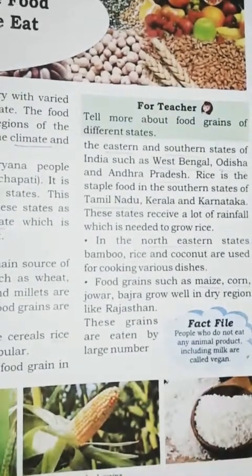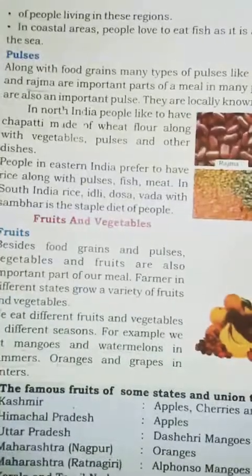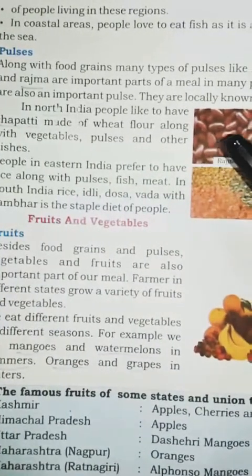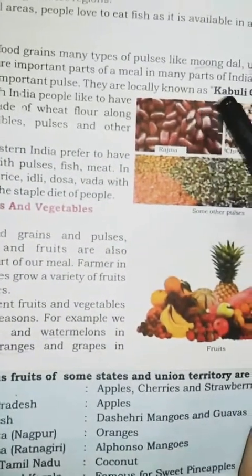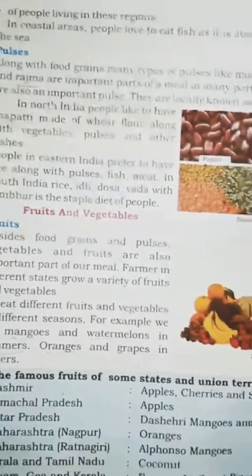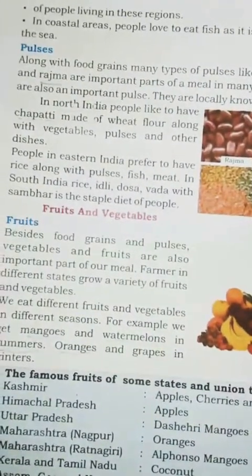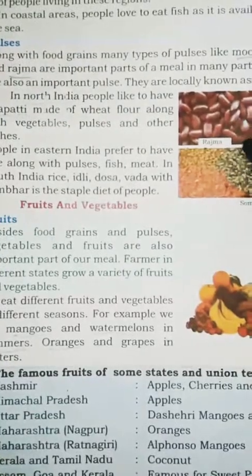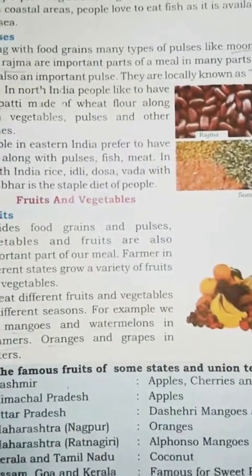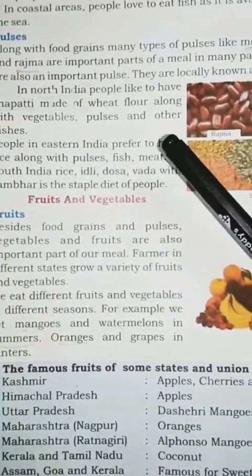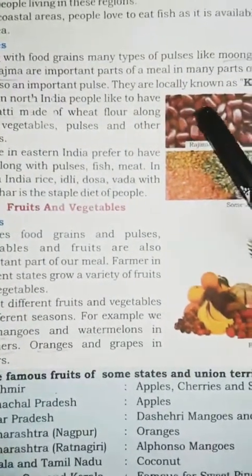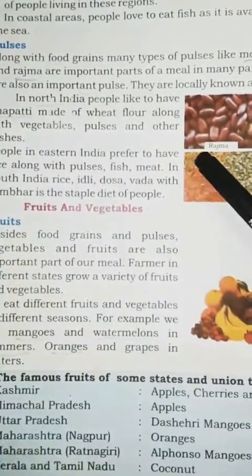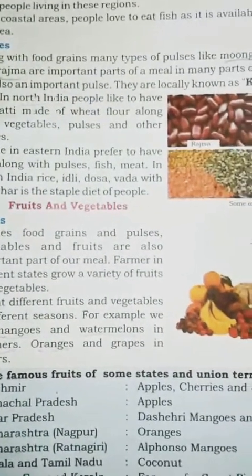These grains are eaten by a large number of people living in these regions. In coastal areas, people love to eat fish as it is available in abundance in the sea. Along with food grains, many types of pulses like moong, urad, masoor, and rajma are important parts of a meal in many parts of India.